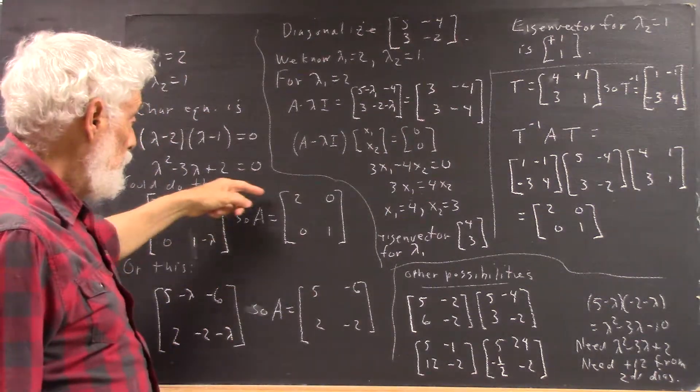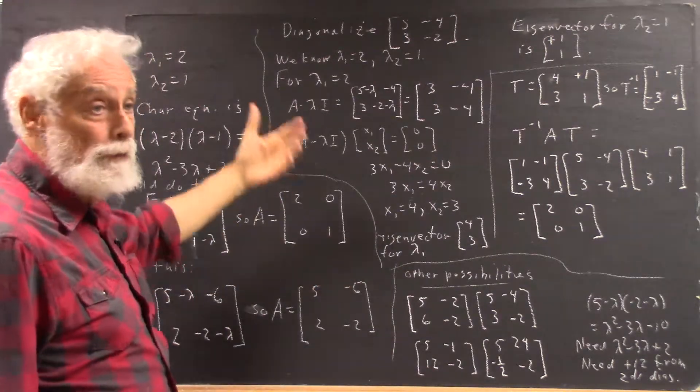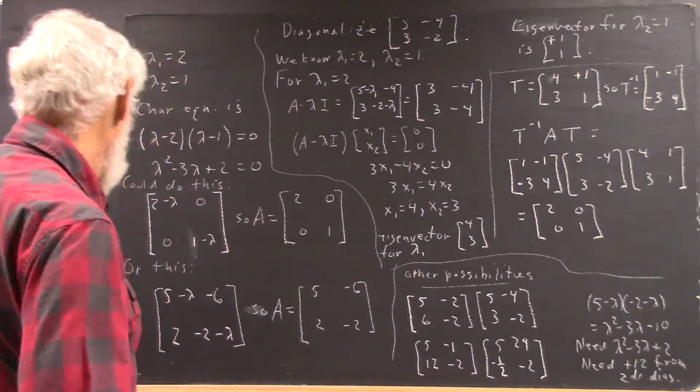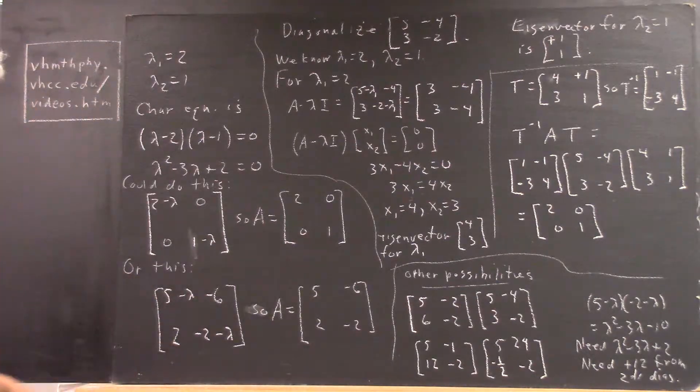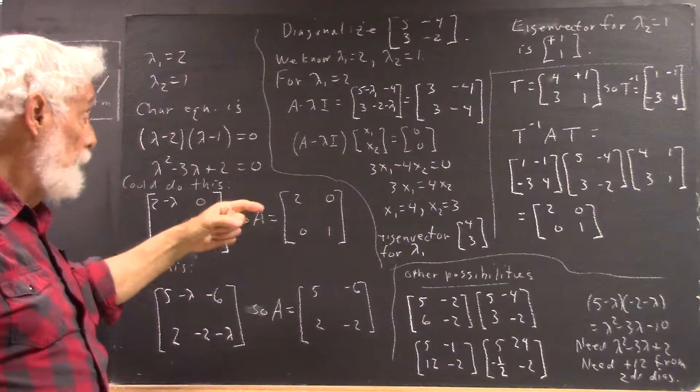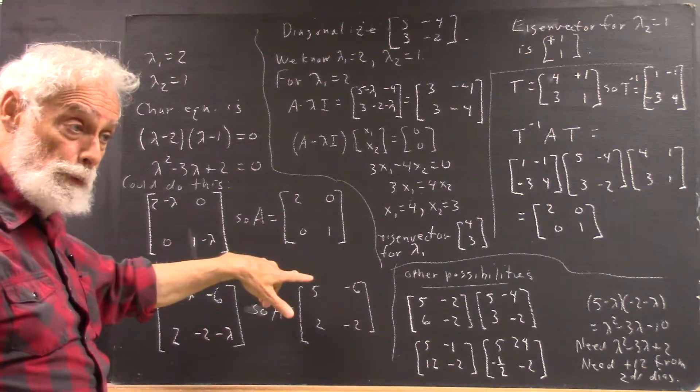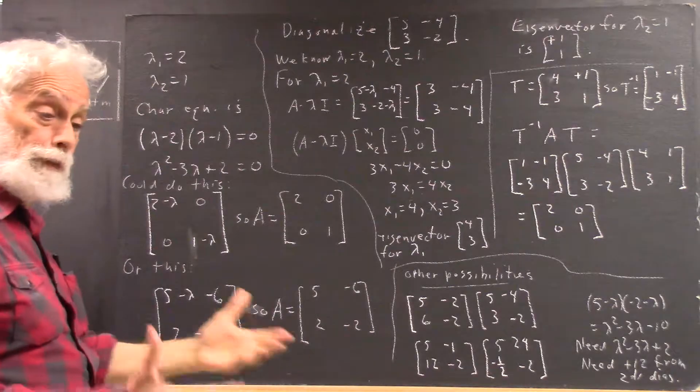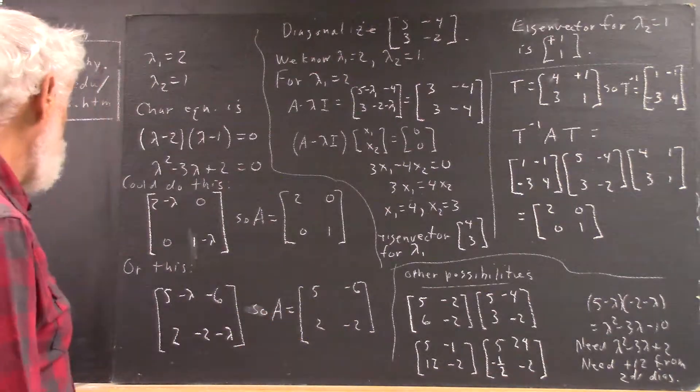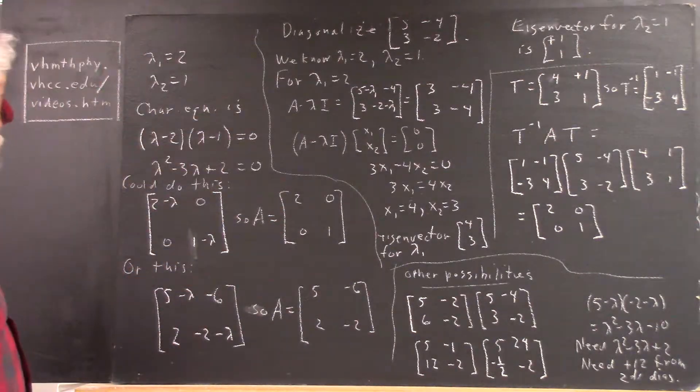You would end up with just Y1 prime equals 2Y1 and Y2 prime equals Y2, both of those independent of one another. And you would get two solutions. In other words, your equations would decouple at this point into an equation in Y1 and a linear equation in Y2 solved using integrating factors and so forth. Well, that's if you have this matrix. If this was your A matrix for a system.